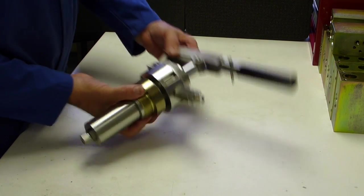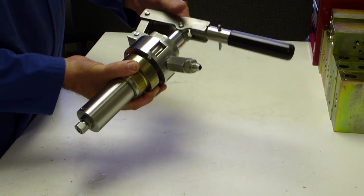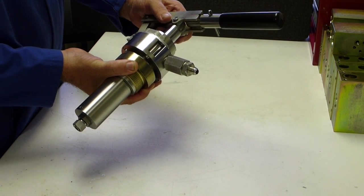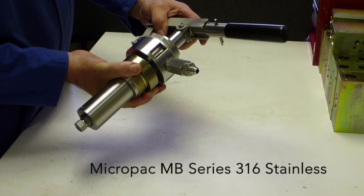Today we're going to look at a Micropack MB-Series 316 stainless drum pump and show how this mounts up on a drum in one minute. We're also going to look at what a useful bit of kit this is.